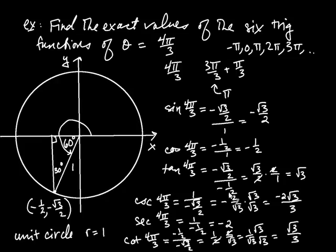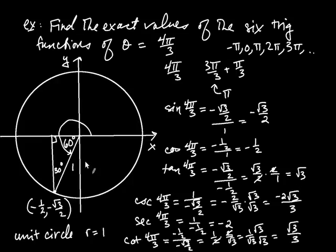So this was a long problem — we found all six trig values of the angle 4π/3. All you have to do is draw your angle and choose any size radius, then find the corresponding coordinates x and y. We'll work on finding trig values of different angles later on. Sometimes it's actually advantageous to choose an r different from 1.